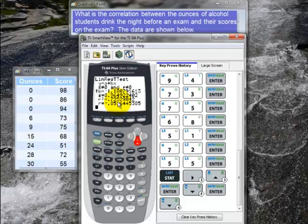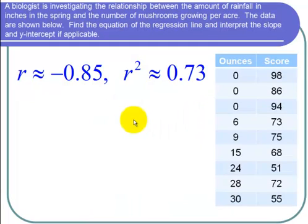Let's go back to the PowerPoint. Here's the PowerPoint. Remember R was about equal to negative 0.85 and R squared was about equal to 0.73. Let's interpret R first.